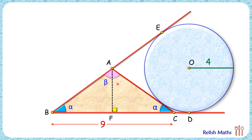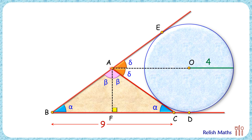Now, with respect to this circle, from point A two tangents are drawn. By theorem, the line segment joining A and O will bisect angle A, so these two angles here will be equal. If this angle is delta degrees, then the other angle will also be delta degrees. Seeing all the angles around point A: 2 beta plus 2 delta equals 180 degrees, or we can say that beta plus delta equals 90 degrees.